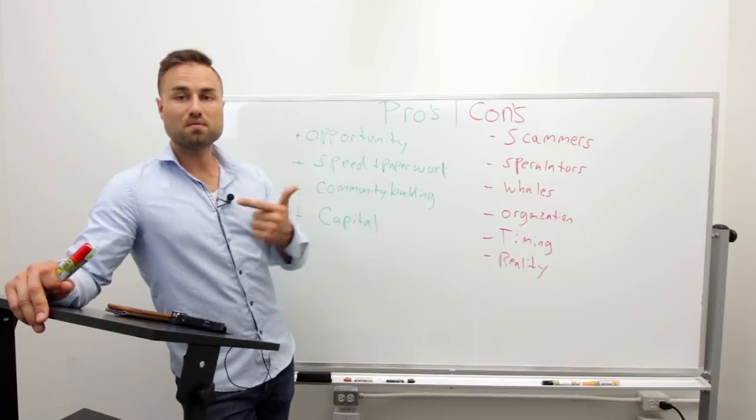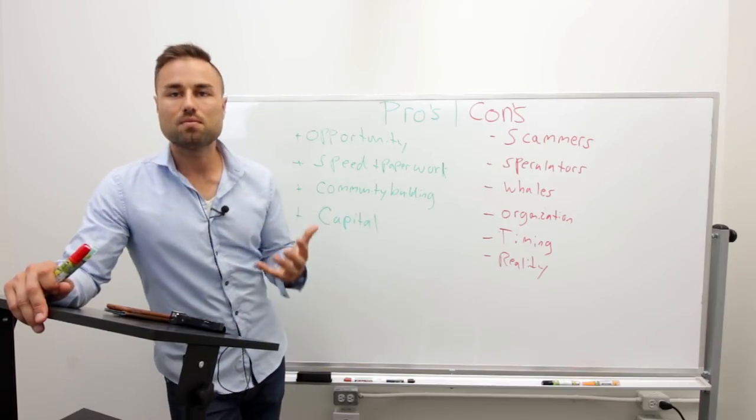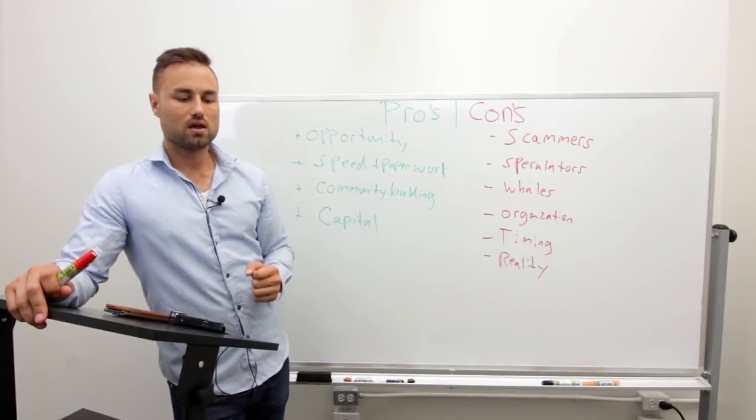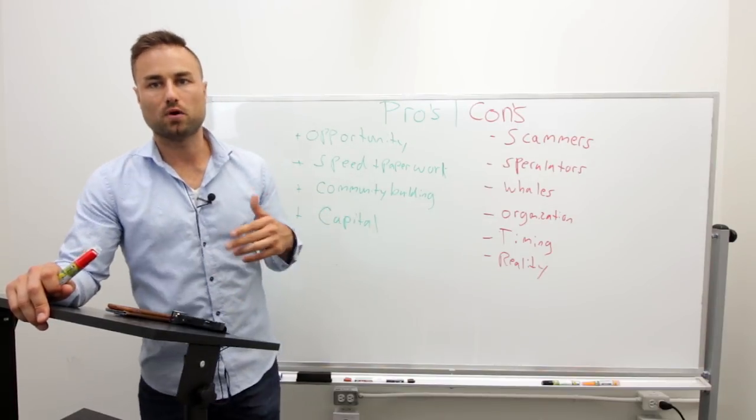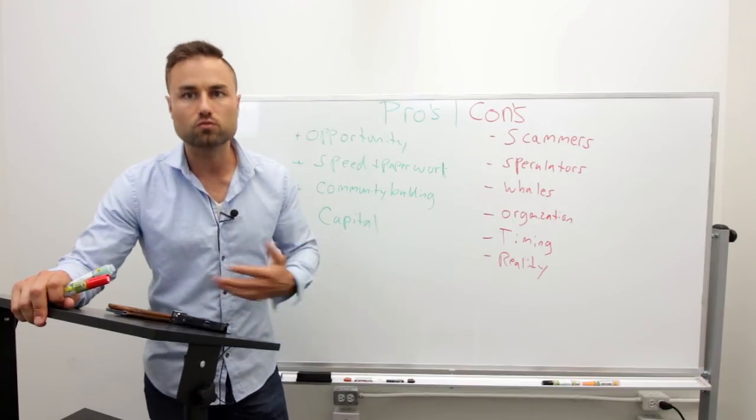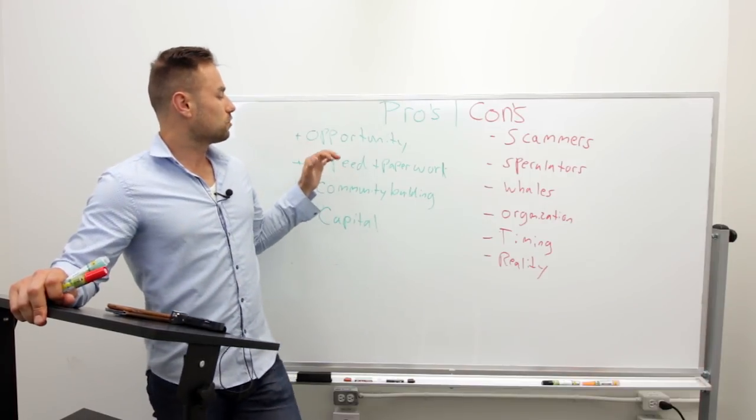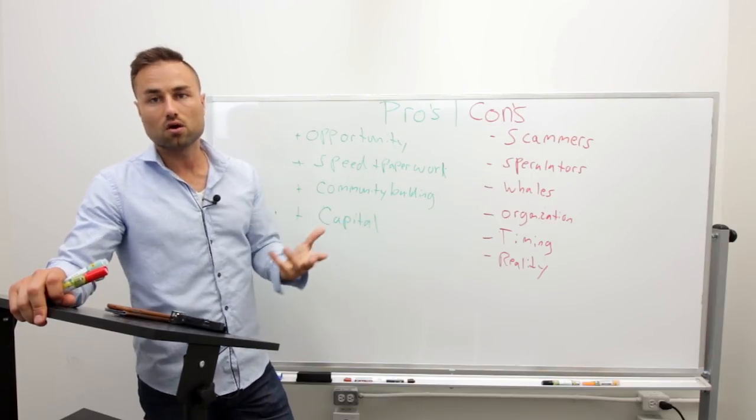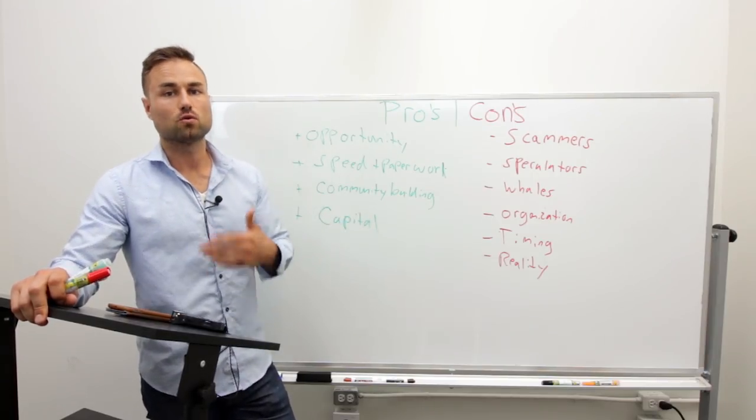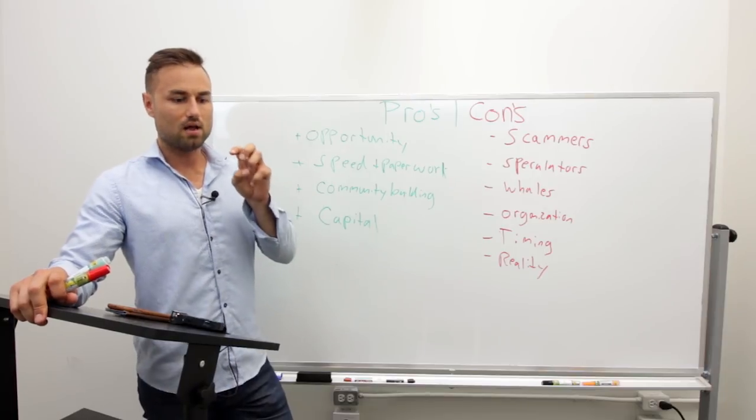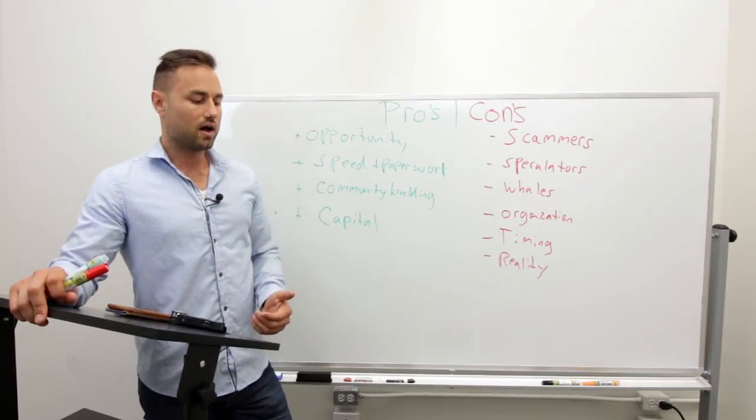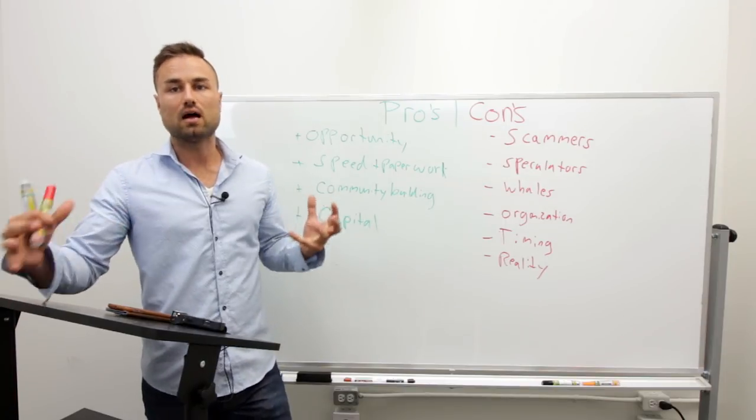So now what ICOs present, they present the opportunity for anybody, regardless of their skin color, regardless of their religion, and what's really important, regardless of geographical location. You don't have to be in Silicon Valley, you don't have to be in Israel, you don't have to be in China. Regardless of your geographical location, you have now the opportunity to raise capital. Yes, there's a lot of cons that come with that. I'll get to that in a second. But in my eyes, that's a huge pro.